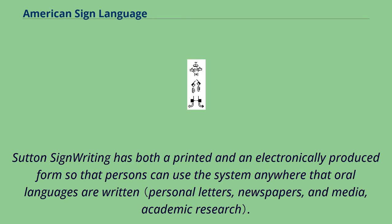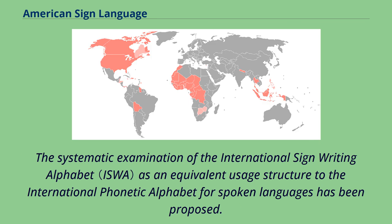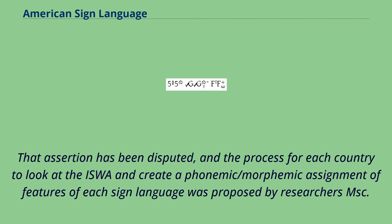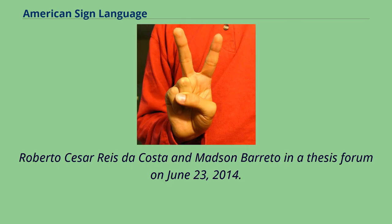Sutton Sign Writing has both a printed and an electronically produced form so that persons can use the system anywhere that oral languages are written. The systematic examination of the international sign writing alphabet as an equivalent usage structured to the International Phonetic Alphabet for spoken languages has been proposed. According to some researchers, sign writing is not a phonemic orthography and does not have a one-to-one map from phonological forms to written forms. That assertion has been disputed, and the process for each country to create a phonemic/morphemic assignment of features of each sign language was proposed by researchers in a thesis forum on June 23, 2014.